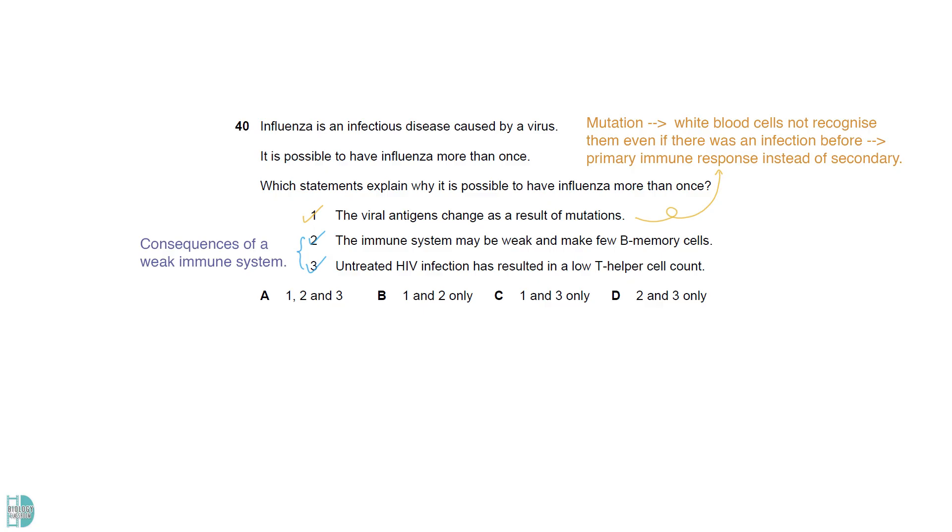Two and three correctly describe the consequences of a weaker immune system. Immunocompromised individuals have a higher risk of getting the same infection more than once.